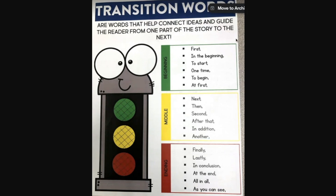Here are some examples up here in this green section — these are some transitions that people sometimes use near the beginning of a story: 'first,' 'in the beginning,' 'to start,' 'one time,' 'to begin,' and 'at first.' Obviously you're not going to use all of them, but maybe you use one or two of those at the beginning of your story.